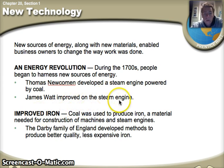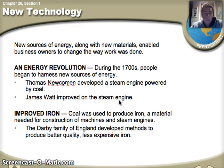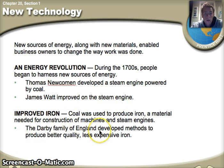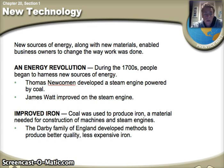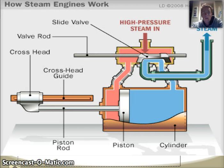Improved iron: people begin to realize that coal could be used to produce iron — a material used in the construction of machines and actual steam engines. The Darby family of England develops methods to produce better quality, less expensive iron, so iron can be more affordable and available to people.